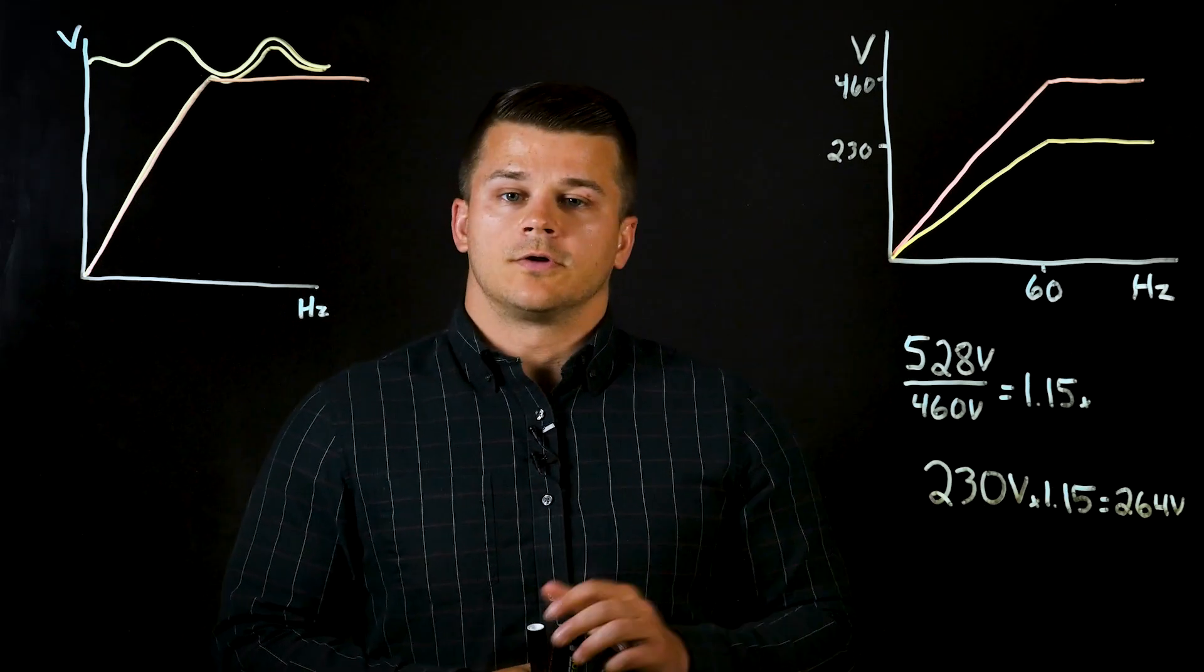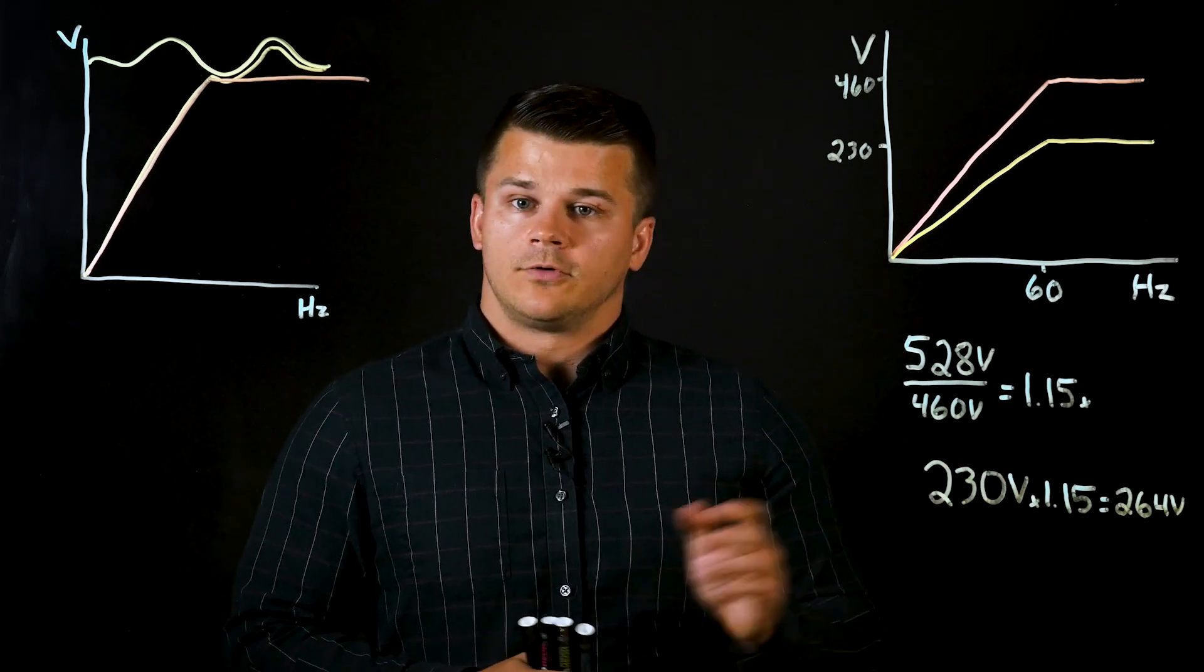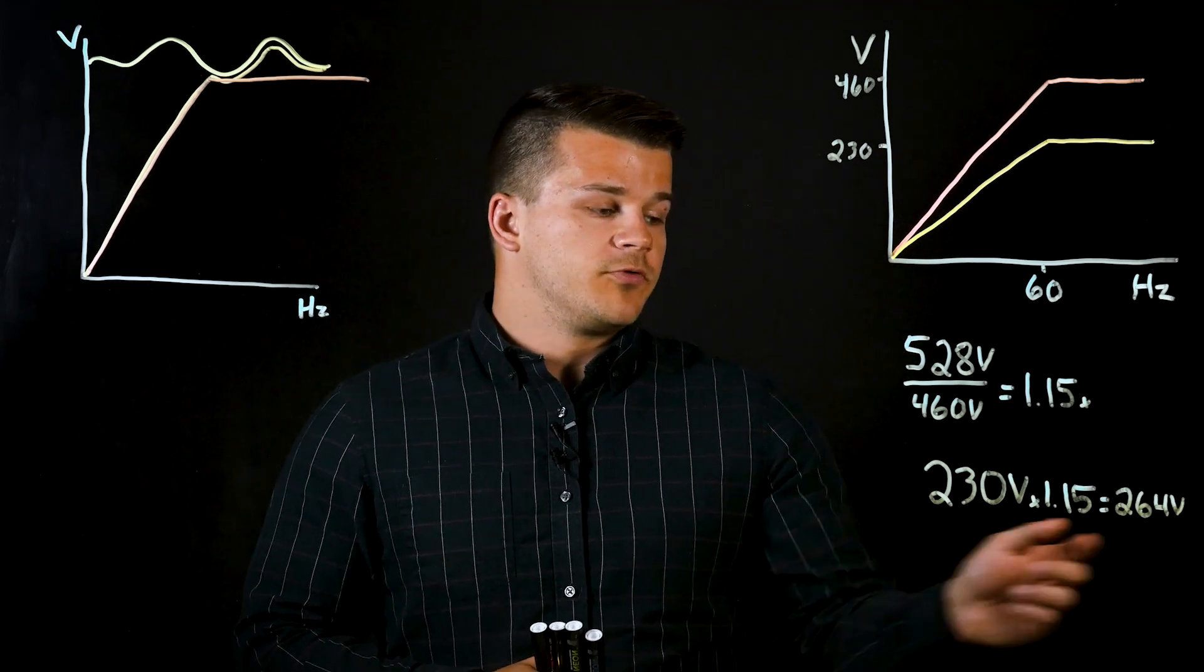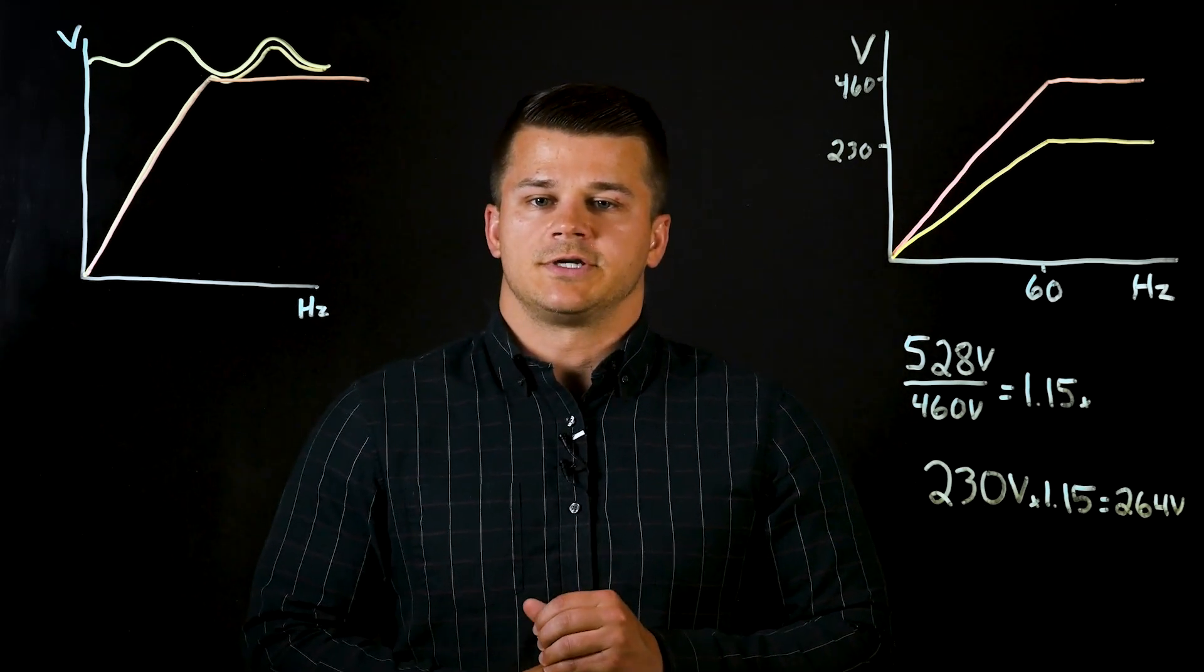For another example with a 230 volt motor, if we take 230 volts, the motor's rated voltage, times this 1.15 factor, we get an output voltage that could be up to 264 volts without the voltage stabilization function.